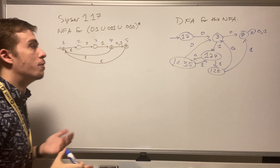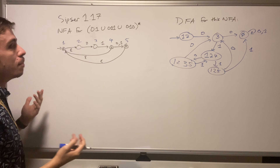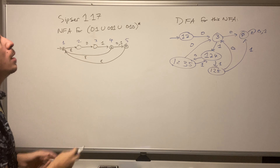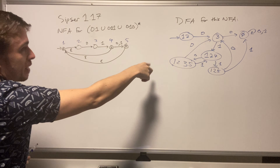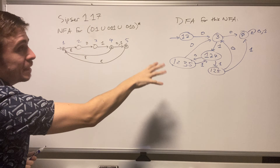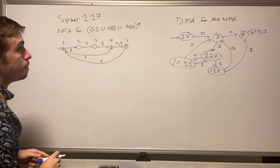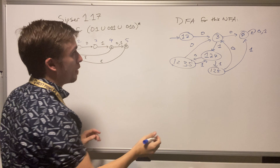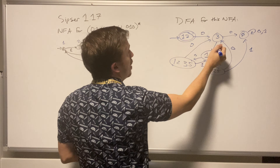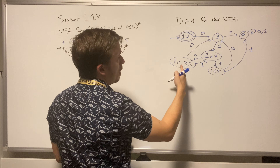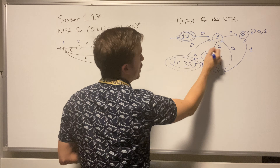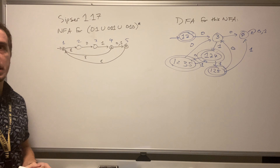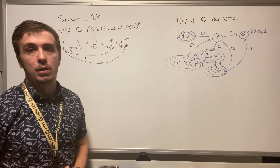For final states, we mark a DFA state as accepting if at least one of the NFA states within it was a final state. So anything that contains state one, four, or five is going to be final. The start state one-two contains one, so it's final. State one-two-four contains one, so it's final. State one-two-three-five contains one, so it's final. State one-two-five contains one, so it's final. States three and the empty set have none of those, so they are not final.